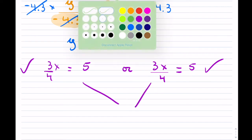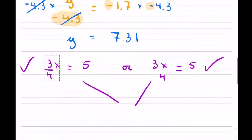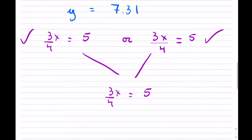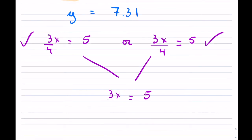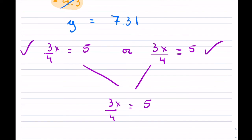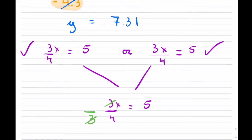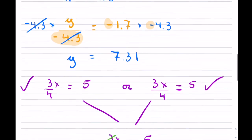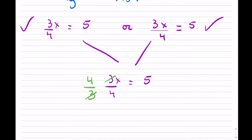How do you approach it? Imagine if there was no 4 — you would divide by 3 on both sides. But we do have this 4. So we divide by 3 to get rid of the 3, and now we also have a 4 in the bottom. To get rid of the 4, you multiply by 4. This cancels. You have to do that to both sides. What you're doing is multiplying by the reciprocal.